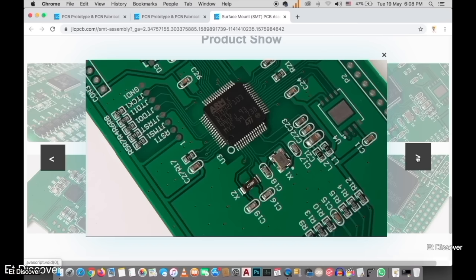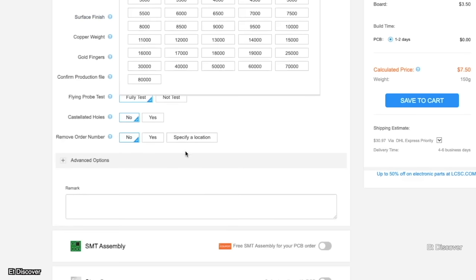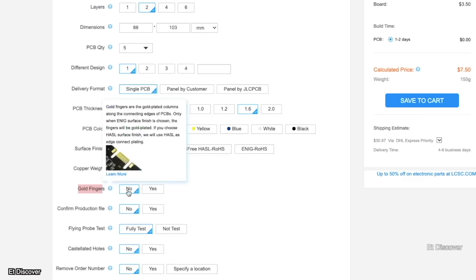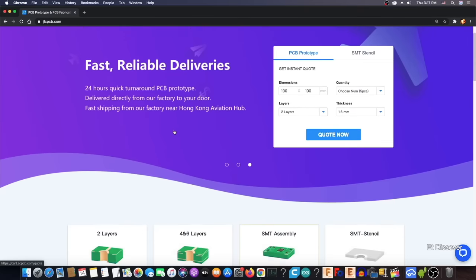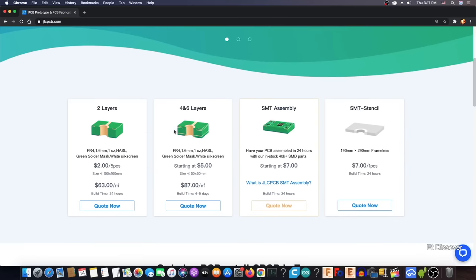There are also many benefits, such as SMT service, stencil, PCB panel, gold plate, and so on. To take advantage of all those opportunities, today upload your Gerber file by visiting the JLCPCB website for few dollars.